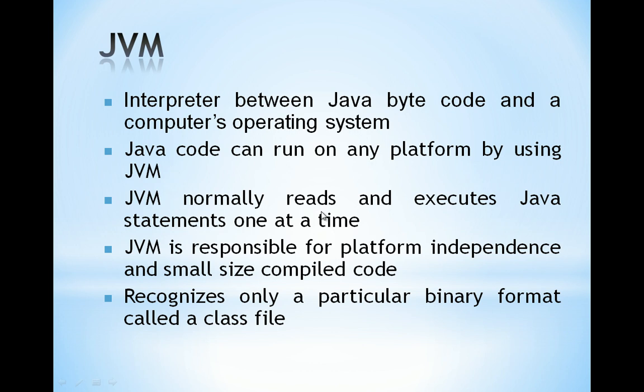Java code can run on any platform using JVM. Since all operating systems have JVM built in, the platform independence feature of Java exists because of JVM. JVM normally reads and executes Java statements one at a time, so if you make changes in your program you must save and recompile it. JVM is responsible for platform independence and small-size compiled code. It only recognizes binary format — the dot-class file — which is created after using the javac command and used to execute the program via the Java command.